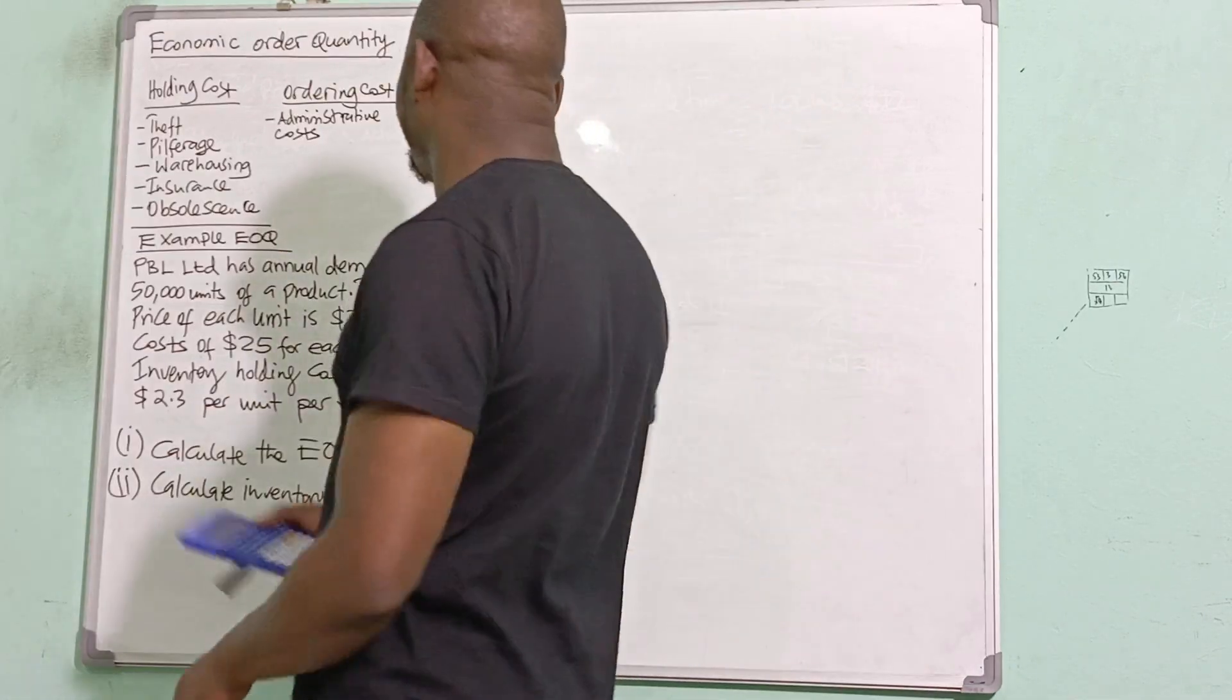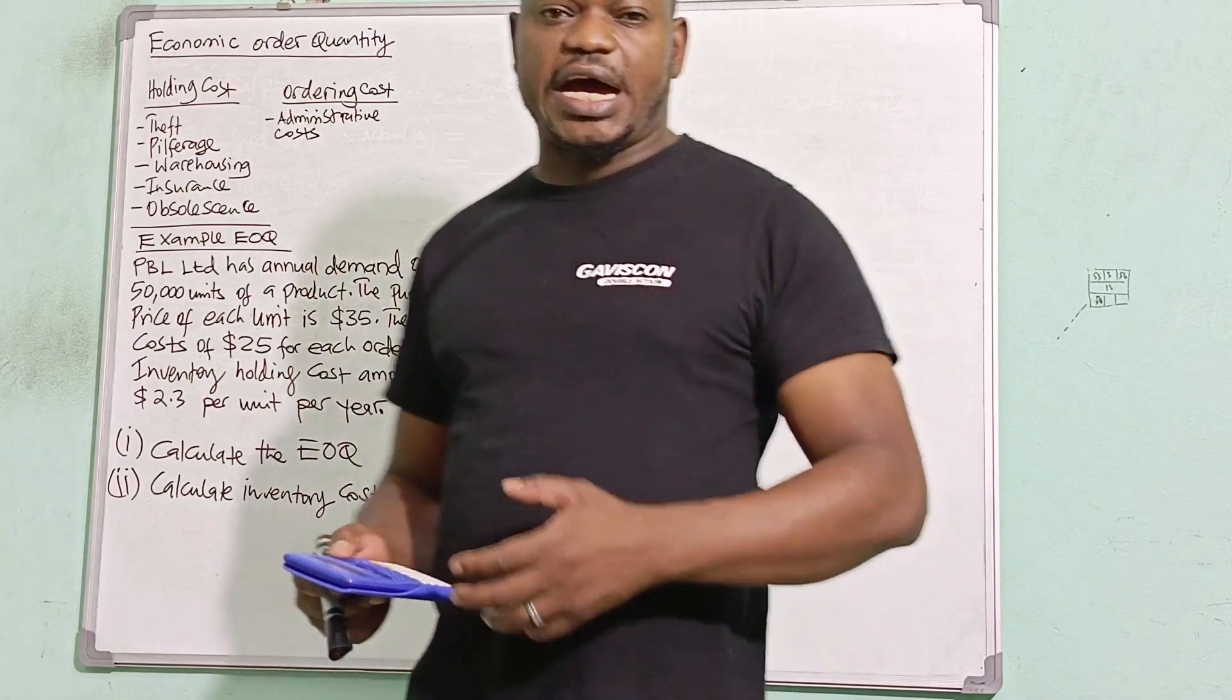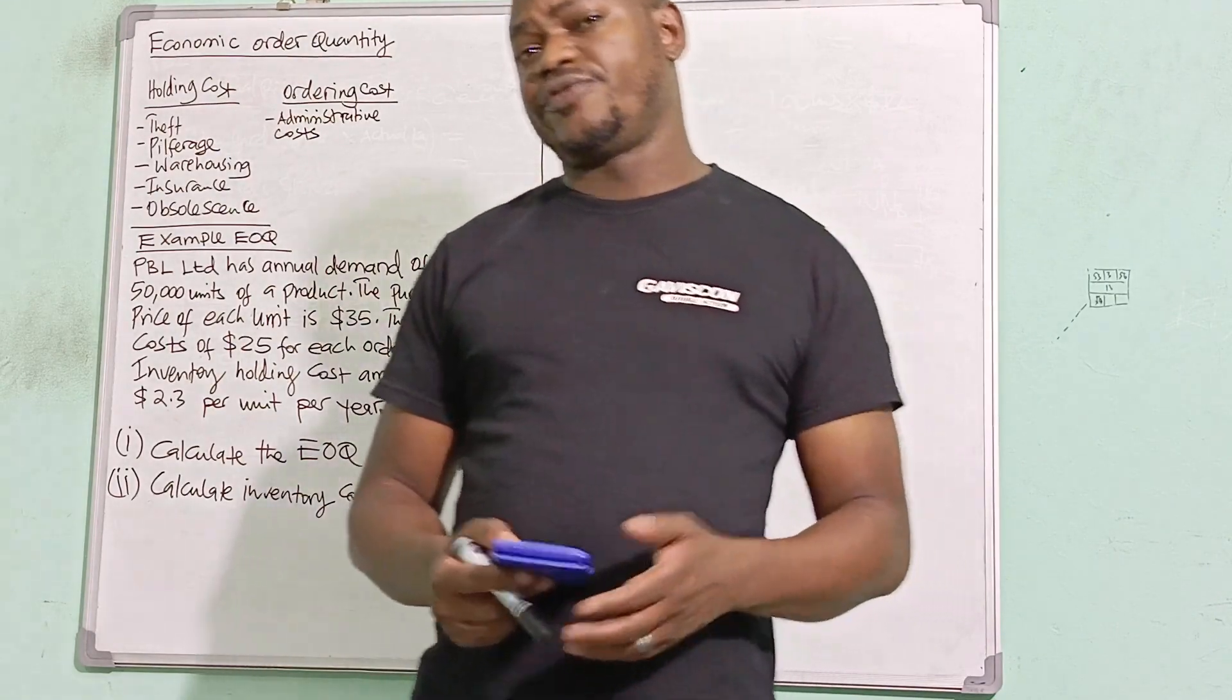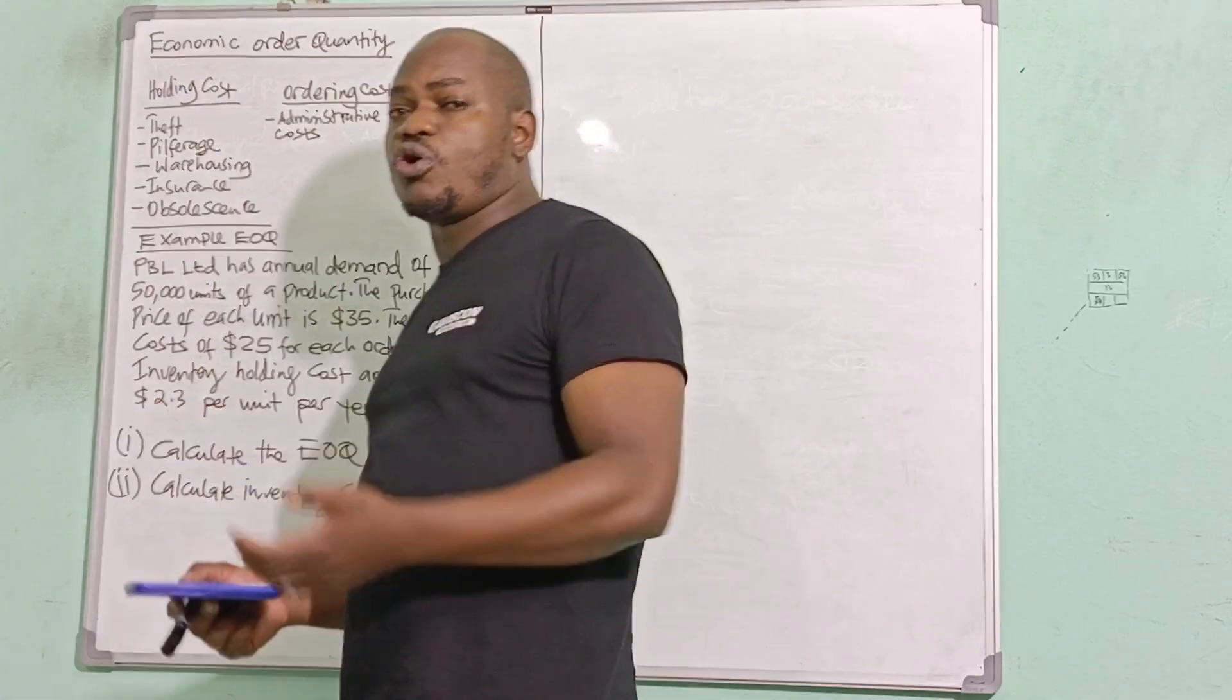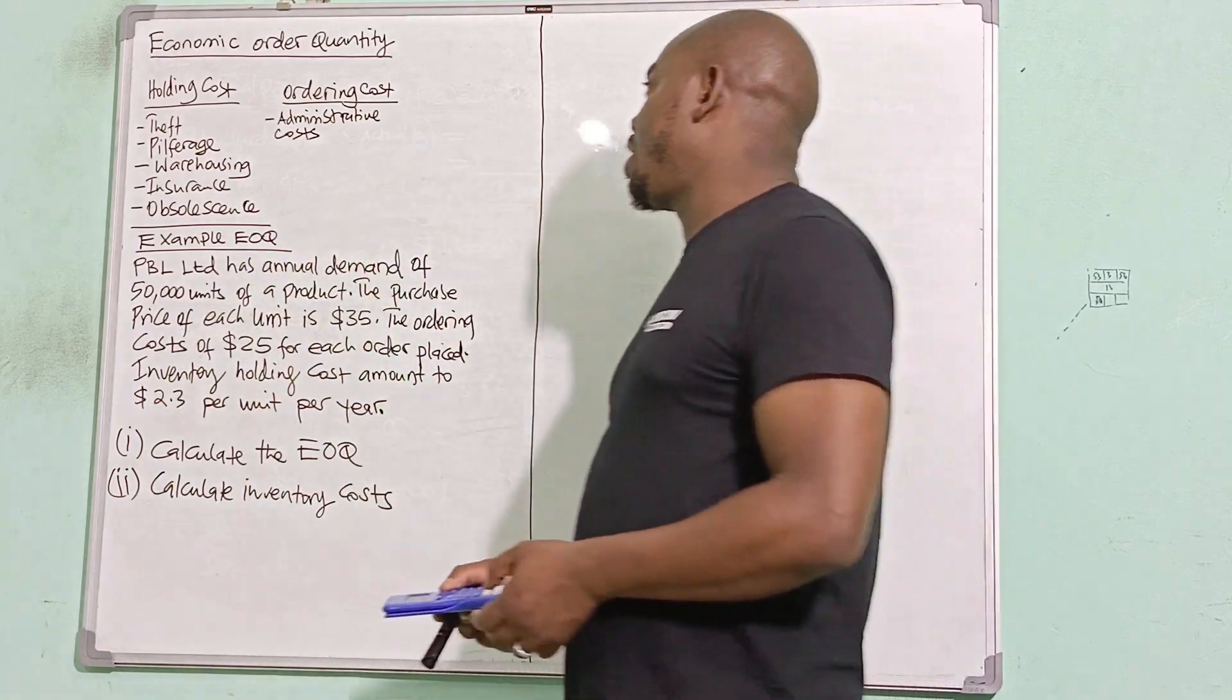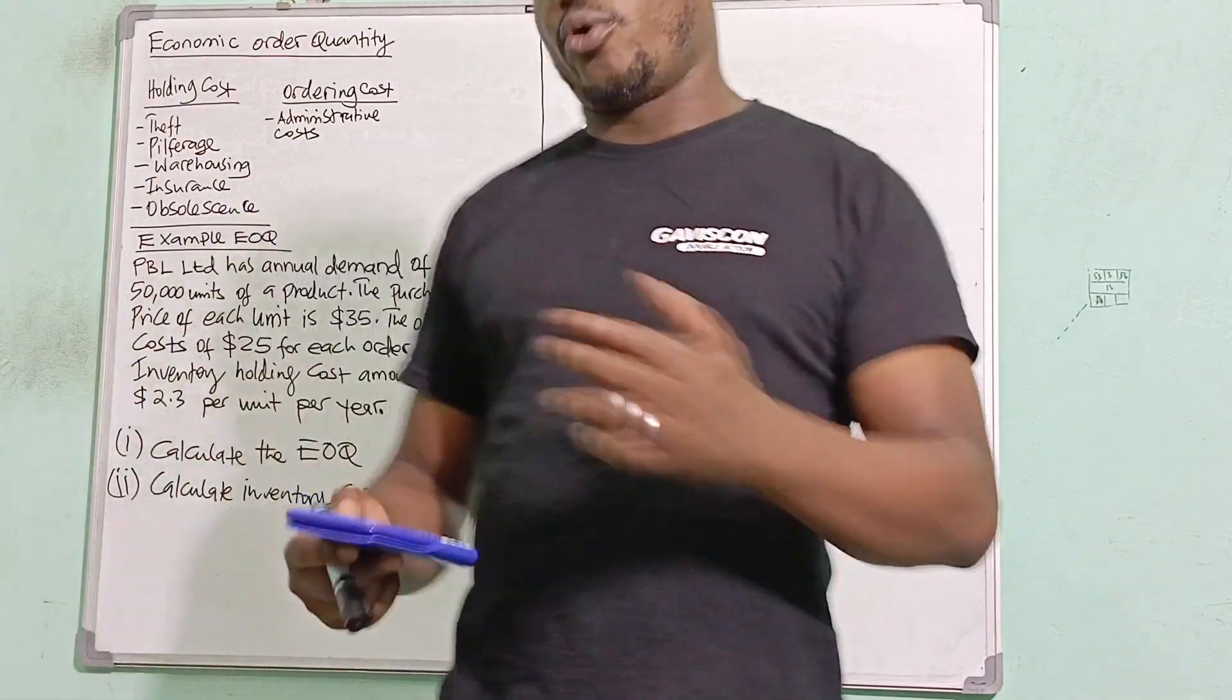Now, ordering cost is easy to define. It's basically all administrative costs which are associated to placing an order. If you make calls for you to place an order, if there is paperwork involved, if there is transport involved, you need to go and check the supplier and something like that, all that will be under ordering costs. So it's all administrative costs which are basically associated to placing an order.